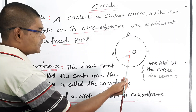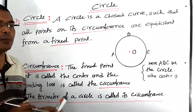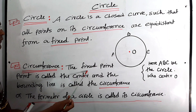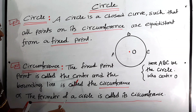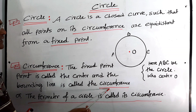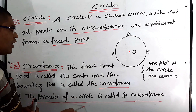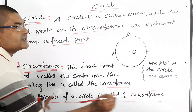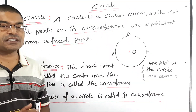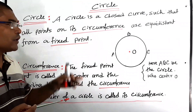Now we have to know the definition of circumference. The fixed point is called the center and the bounding line is called the circumference. The perimeter of a circle is called its circumference. So we have learned the definition of circle and what is called circumference.